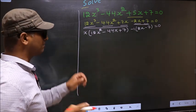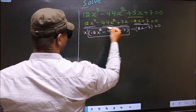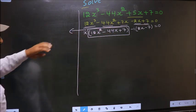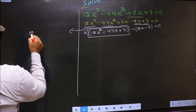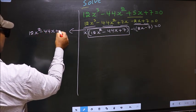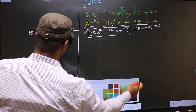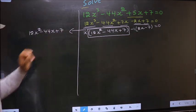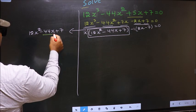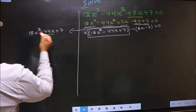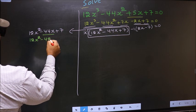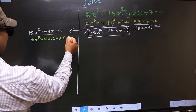We have come across a quadratic here, so I will factorize 12x² minus 44x plus 7. To factorize this we should split the middle term, that is minus 44x. So in place of minus 44x, now I write minus 42x minus 2x plus 7.